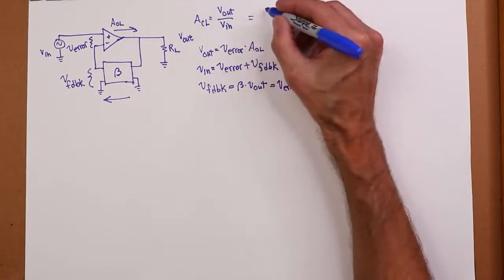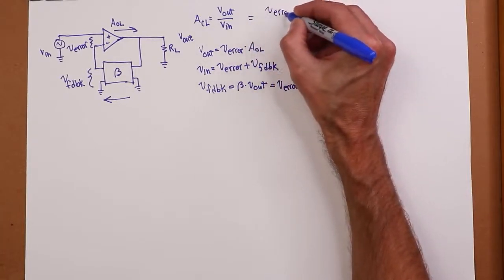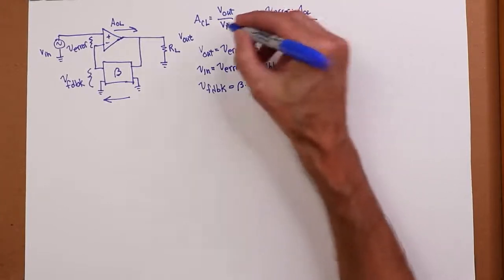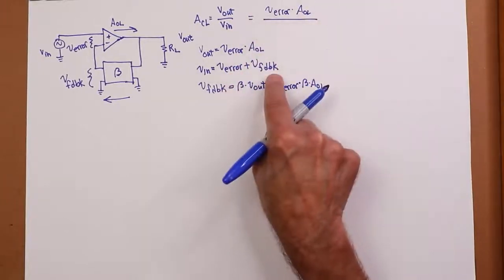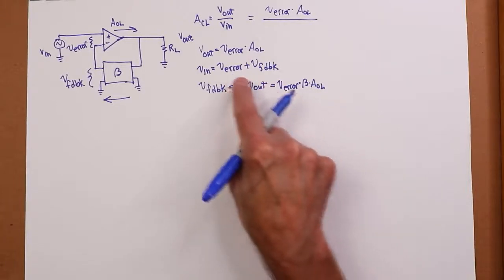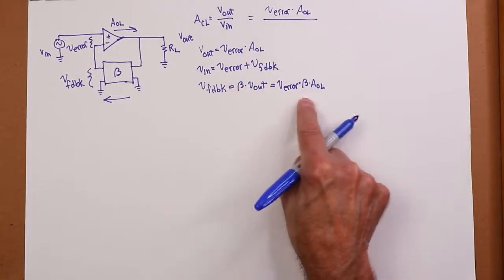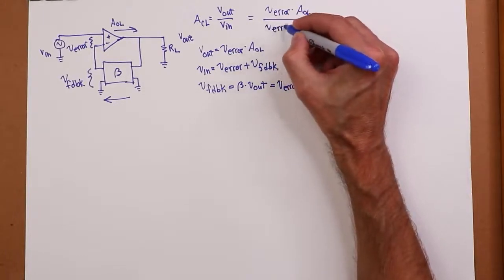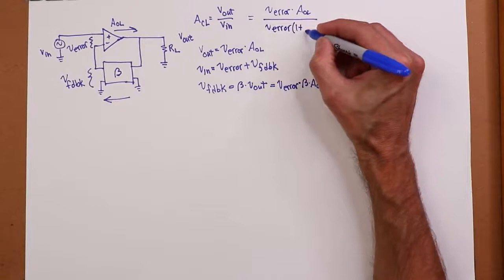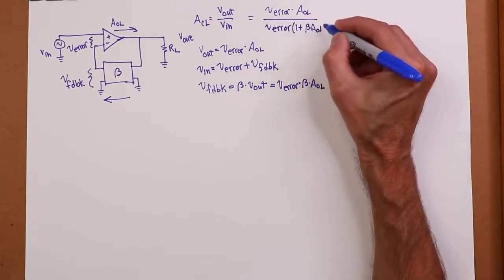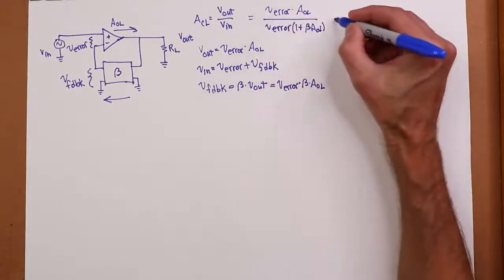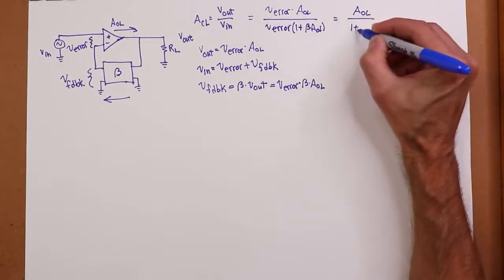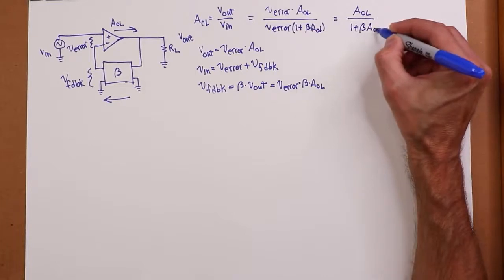The value that we're going to get for V in is V error plus V feedback, which is in turn equal to V error beta AOL. So I can factor out the V error there and get V error times one plus beta AOL. And V out, we already know, is V error times AOL. And it's pretty obvious you can cancel out your V errors, and your closed loop gain is AOL divided by one plus beta AOL. That's pretty cool.